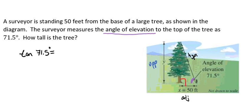So we're going to take the tangent of 71.5 degrees. Then we're going to have our opposite over adjacent, which is Y over 50. And now we're trying to get the Y by itself. So we're going to multiply both sides by 50, which is going to give us Y equals 50 times the tangent of 71.5 degrees.